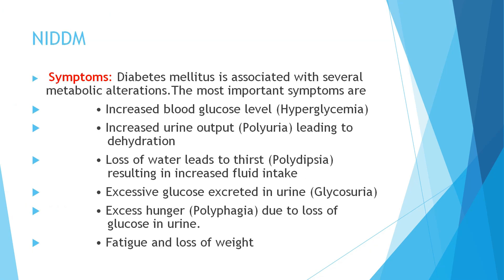What are the symptoms of diabetes mellitus? It is associated with several metabolic alterations. The most important symptoms are: first, an increase in blood glucose level called hyperglycemia. This causes increased urine output called polyuria, which leads to dehydration or loss of water from the body. Loss of water leads to thirst, called polydipsia.